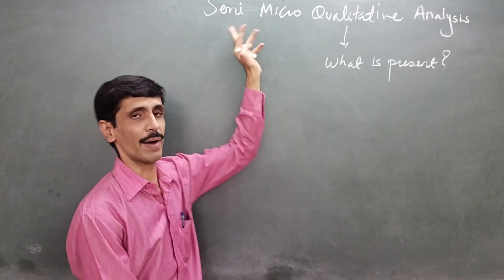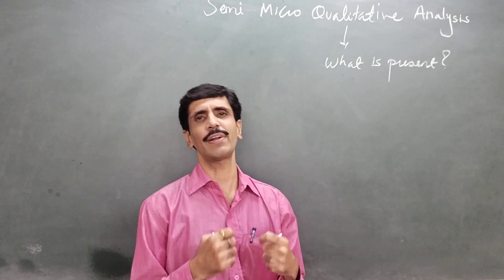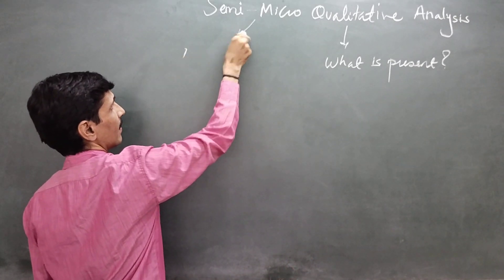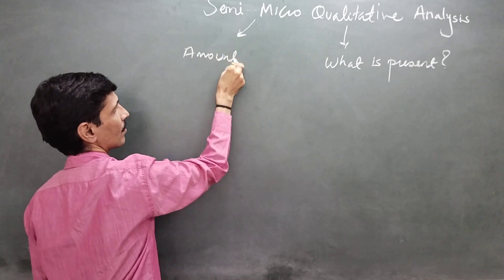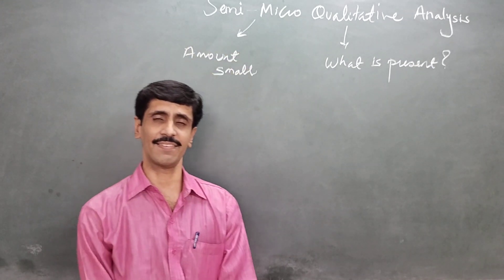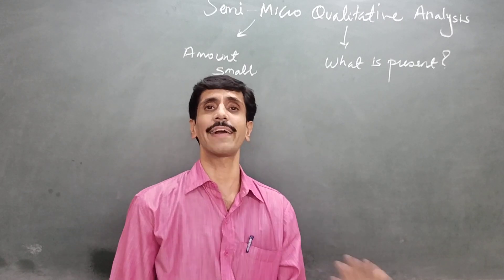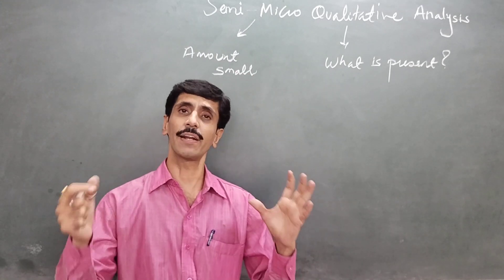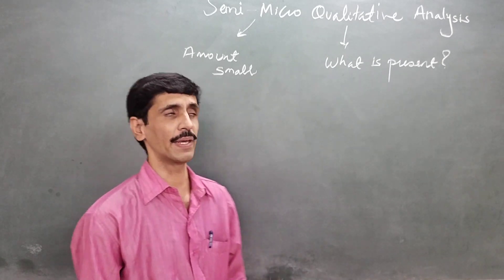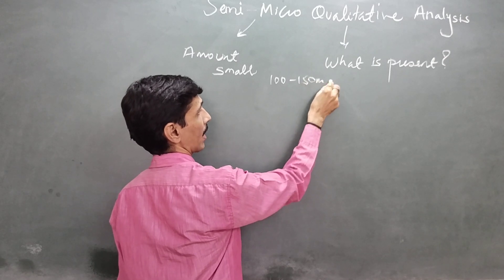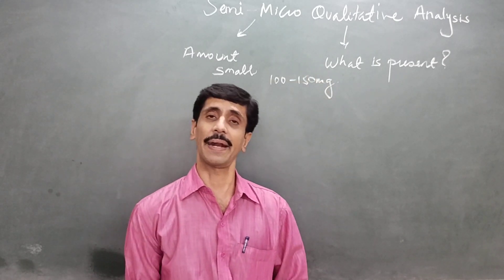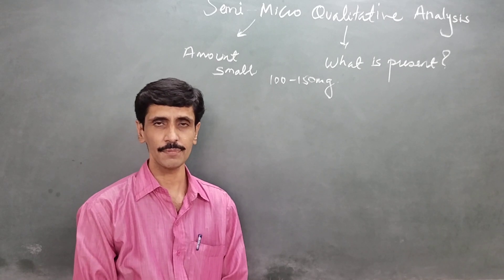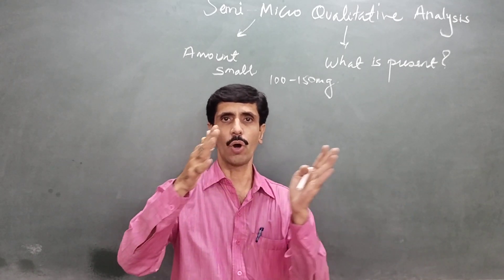Next is 'Semi-micro.' What does this word indicate? Semi-micro is related to amount — we are taking a small amount of a substance during analysis. Now, what do we mean by 'small'? When I talk about a solid mixture, that solid has to be somewhere around 100 to 150 milligrams. On a practical basis, this is the range — 100 to 150 milligrams of the salt has to be considered.